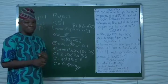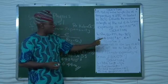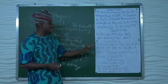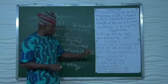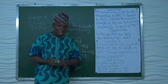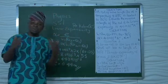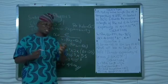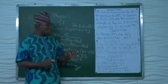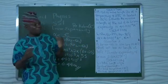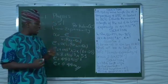Let's quickly look at the second question. Question 2: A brass rod is 10 meters long at 41 degrees Celsius. What will be its length at 30 degrees Celsius? The linear expansivity of brass is 2.0 times 10 to the power of minus 5 per Kelvin. The parameters: initial length L1 is 10 meters. The final length L2 is unknown. The initial temperature theta 1 is 41 degrees Celsius, and the final temperature theta 2 is 30 degrees Celsius.